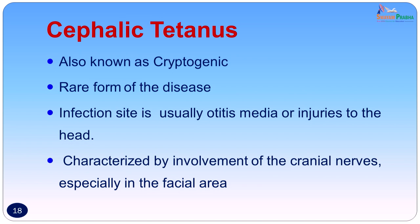Cephalic tetanus, also sometimes known as cryptogenic tetanus, is a rare form of the disease. The infection site is usually in the middle ear where the patient may have otitis media; other aerobic organisms are present, and the anaerobic environment in the closed ear allows tetanus spores to easily germinate. Injuries to the head can also cause cephalic tetanus. It is characterized by involvement of the cranial nerves, especially in the facial area.